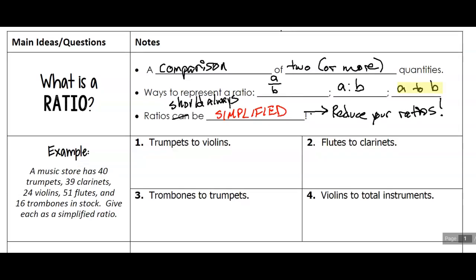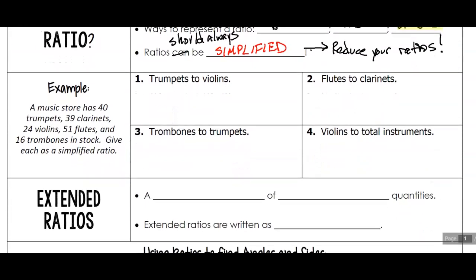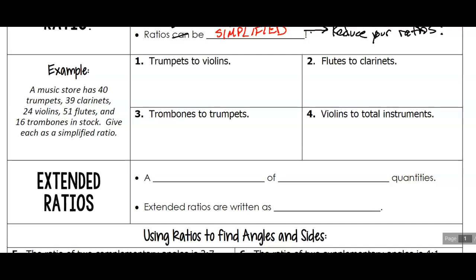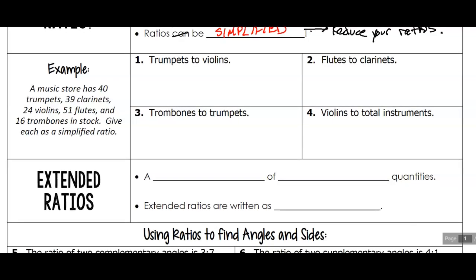So let's take a look at writing some ratios. We have an example here. A music store has 40 trumpets, 39 clarinets, 24 violins, 51 flutes, and 16 trombones in stock. Give each as a simplified ratio. We're going to do two of these together and then I'm going to have you do two as part of your assignment. So let's do number one. Trumpets to violins.